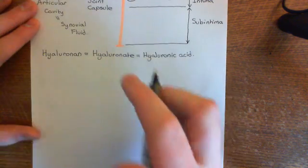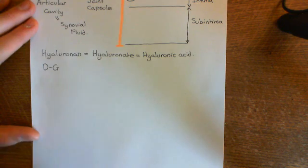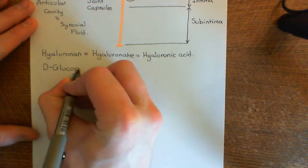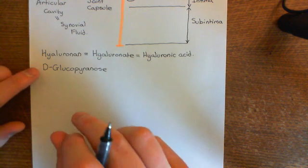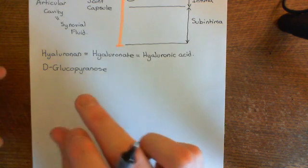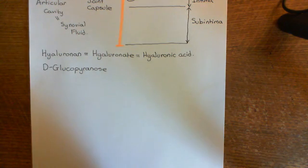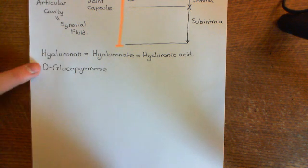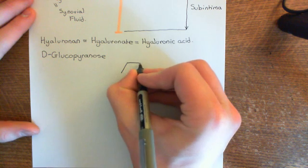We firstly need to start off with the structure of D-glucopyranose because both of the monosaccharides which we're going to use to construct a hyaluronic acid molecule are going to be based on the structure of D-glucopyranose. This is cyclic glucose. Often people will just call this glucose without the D and without the pyranose. Strictly speaking, you need both — the pyranose tells you that it's in a cycle. Glucose can exist in a linear form and then in a cyclic form, and strictly speaking the cyclic form is called glucopyranose.